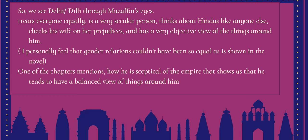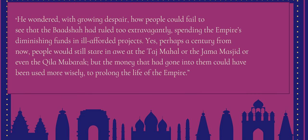One chapter discusses the Empire and offers an interesting insight about how it was slowly crumbling. Muzaffar Jung wonders how the Badshah had been spending so extravagantly on building projects like the Taj Mahal. He says: 'He wondered with growing despair how people would fail to see that the Badshah had ruled too extravagantly, spending the empire's diminishing funds on ill-afforded projects. Yes, people a century from now would still stare in awe at the Taj Mahal or the Jama Masjid, but the money could have been used more wisely to prolong the life of the Empire.'